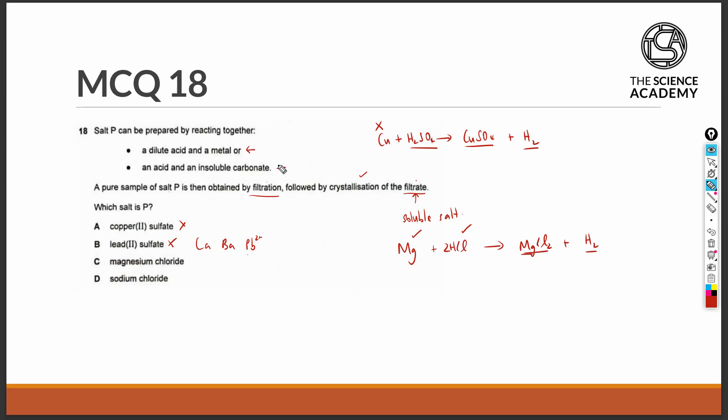Let's see if method 2 works in producing magnesium chloride. The acid and the insoluble carbonate will be hydrochloric acid and magnesium carbonate. The salt of magnesium chloride is produced together with a by-product of carbon dioxide and water. This reaction will occur because magnesium carbonate is indeed an insoluble carbonate, and carbonates can react with acids to give you the salt, carbon dioxide, and water as the by-product. So C could be the correct answer.